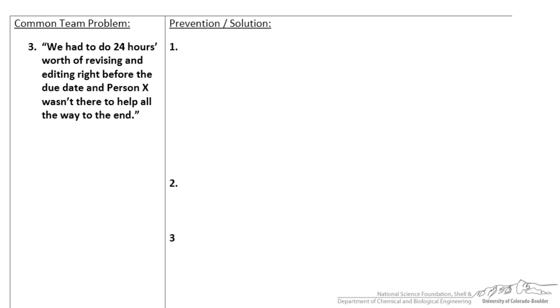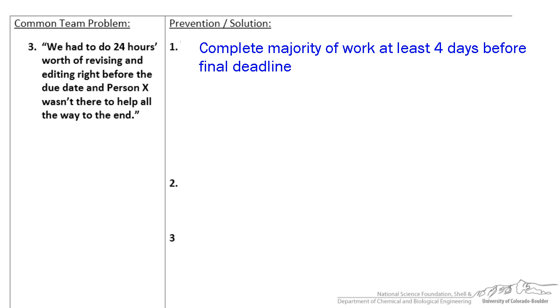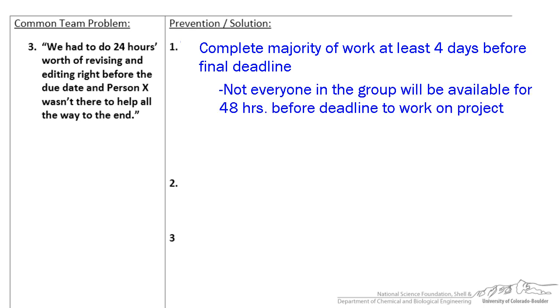The next common problem is: we had to do 24 hours worth of revising and editing right before the due date, and person X wasn't there to help all the way to the end. While I sympathize with this somewhat, there are a lot of things wrong with this problem. First of all, do not do the majority of the work for the project 48 hours before the due date. The majority of the work should be finished at least four days or a week ahead of the final deadline. This is because it's next to impossible to make sure that everyone in the group has 48 hours before the final deadline completely free to work on the project.